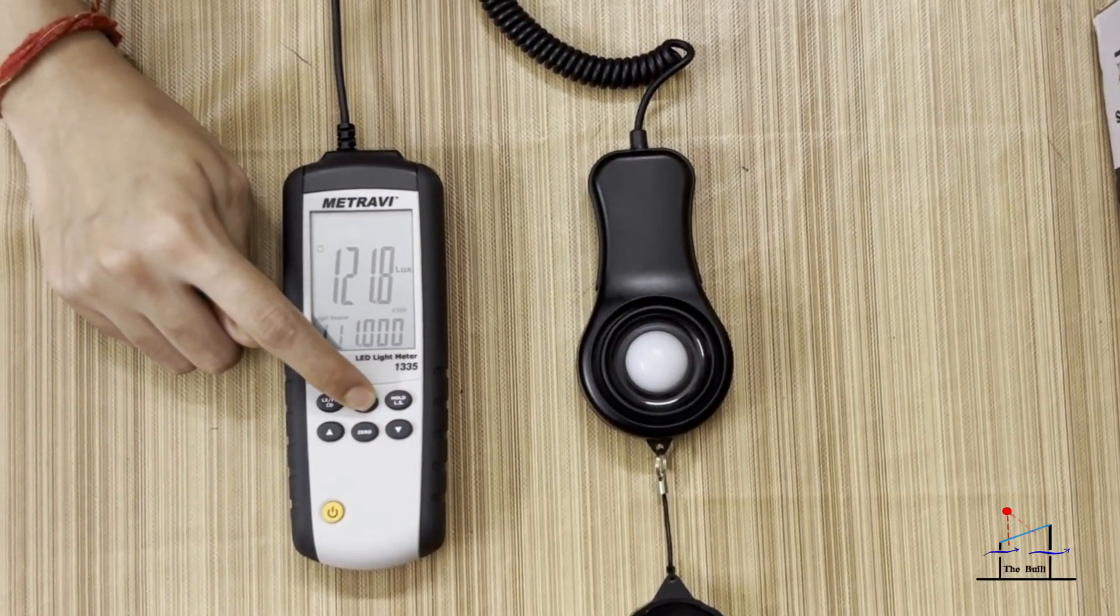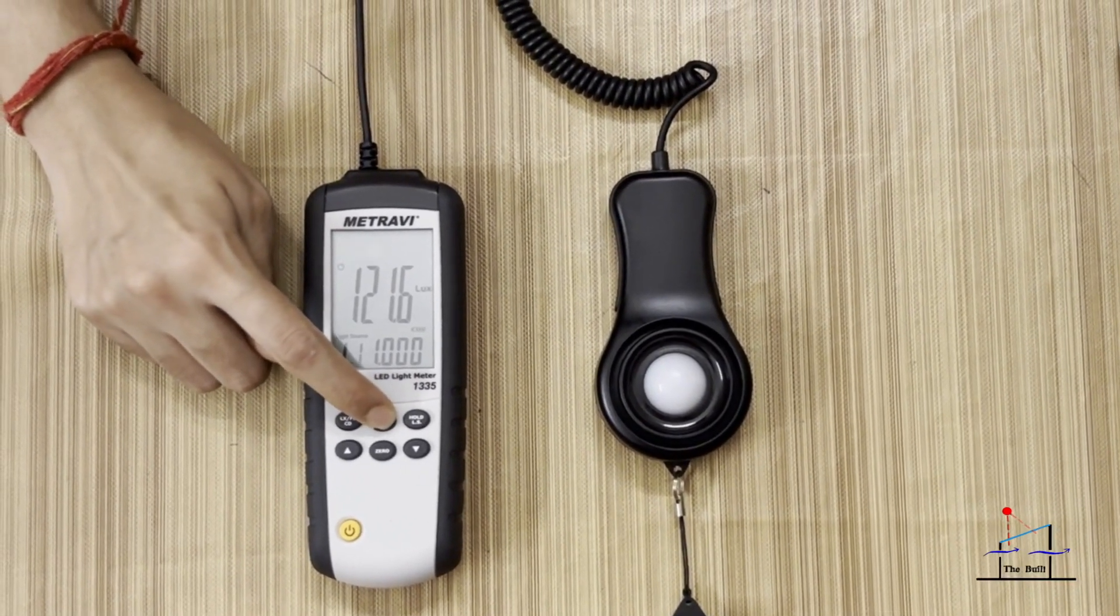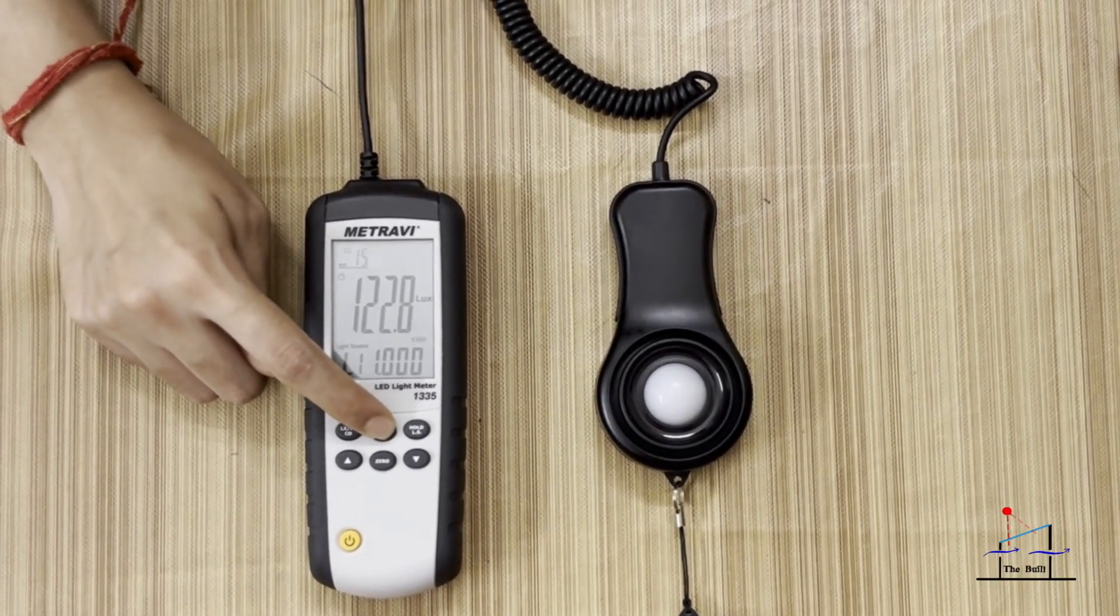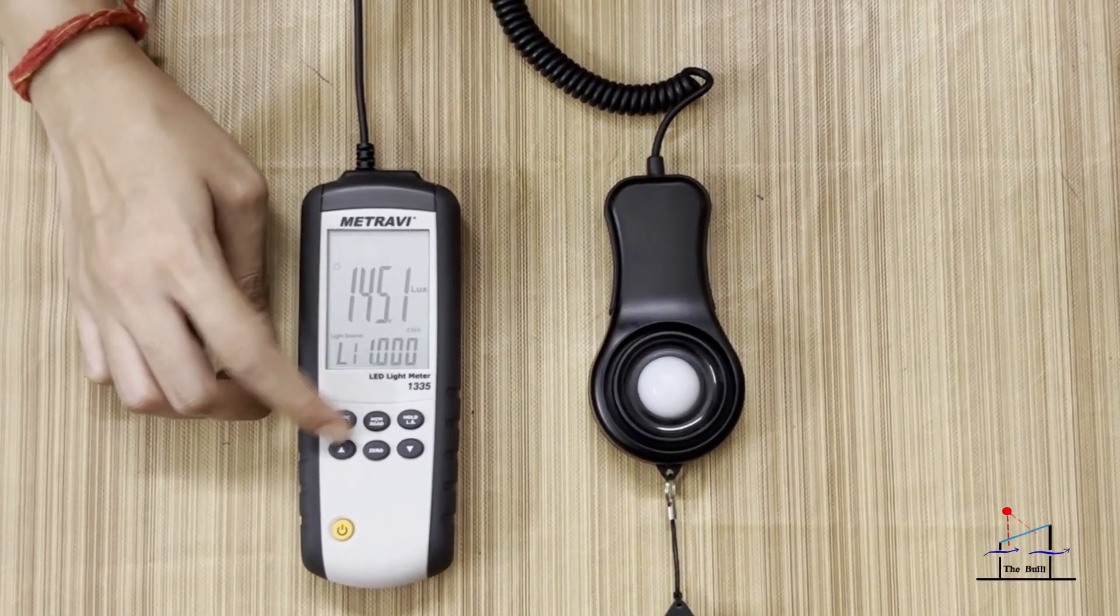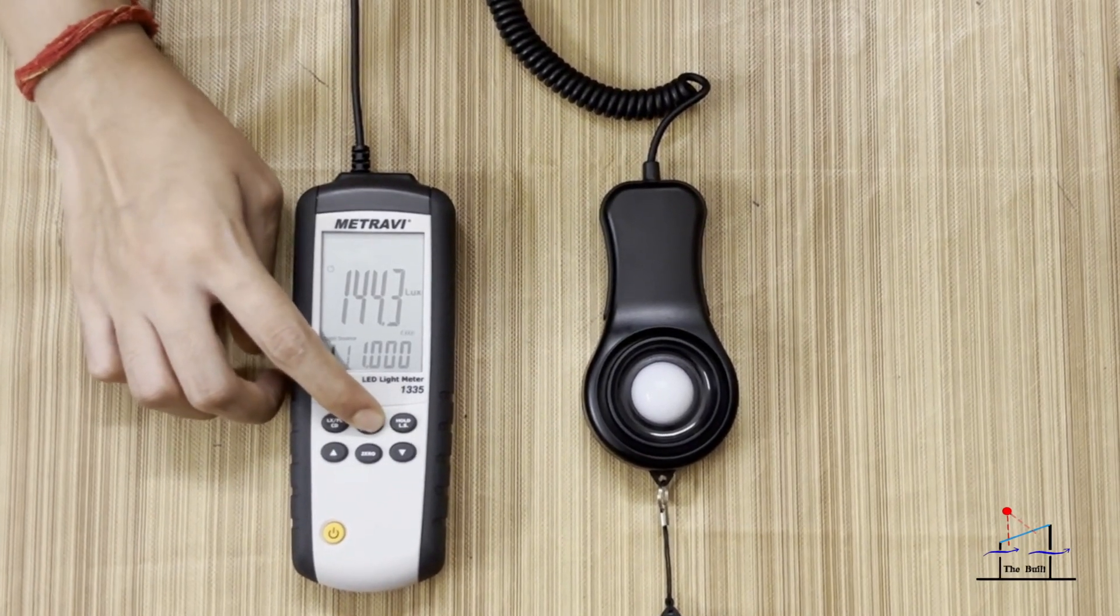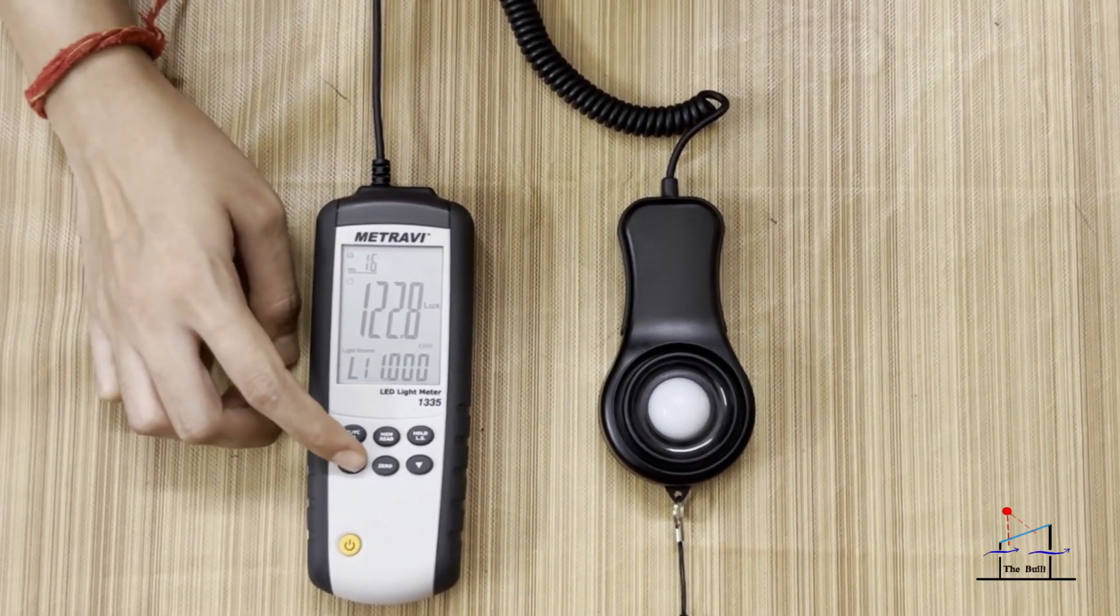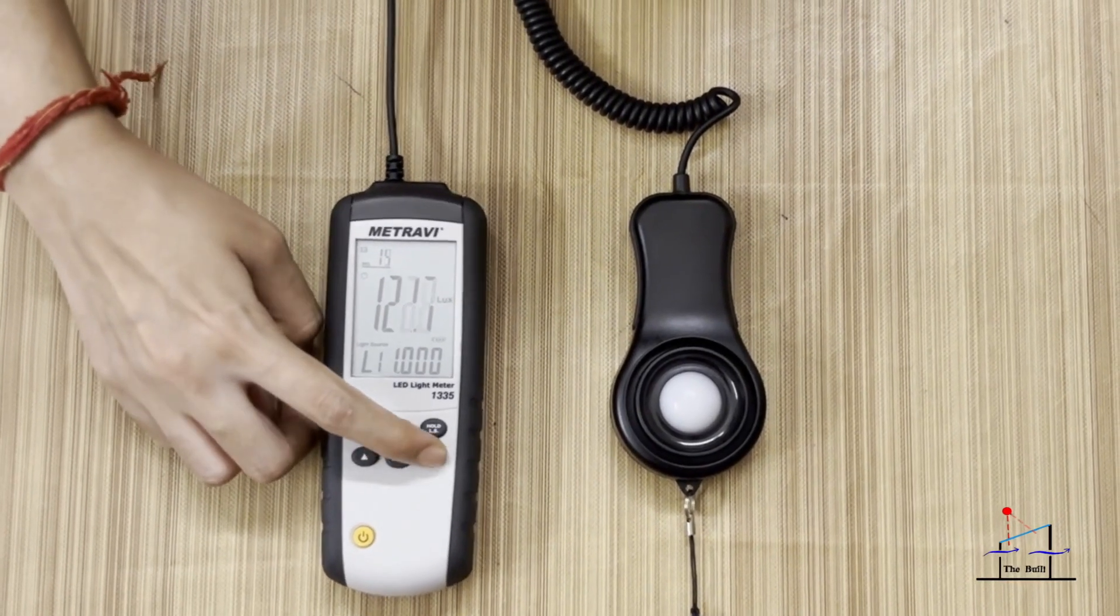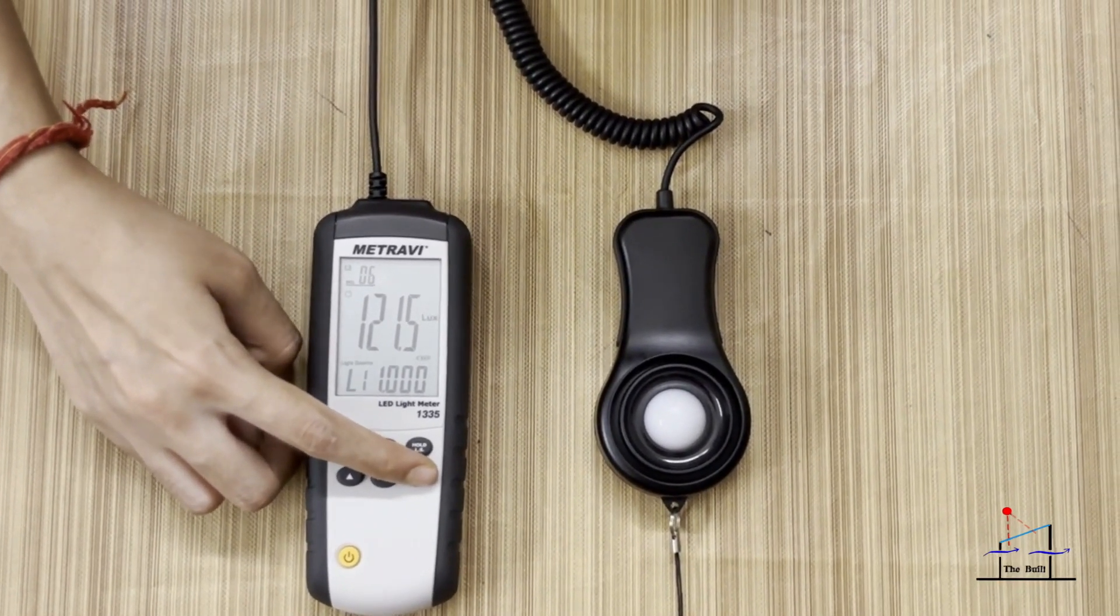This is the memory button. The device can record up to a total of 99 recordings. To check the stored values in the device, we can press the memory button for more than one second to display the stored values, and then we can use this to go back and see our values recorded from 1 to 99.